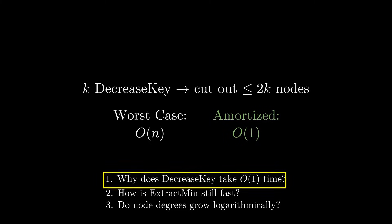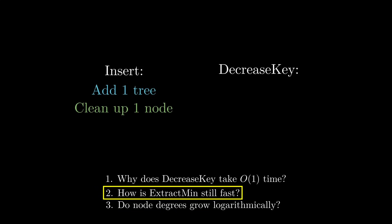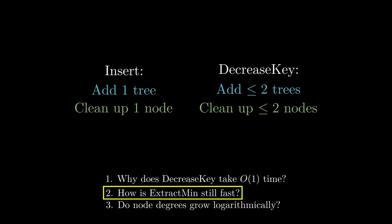This insight allows us to answer the second question as well. Every insert call added one tree to the root list, so we thought of every insert paying in advance for cleaning up that extra node during the next ExtractMin. We now know that every DecreaseKey call on average cuts out at most 2 nodes and therefore adds 2 trees to the root list. So every DecreaseKey needs to pay for cleaning up 2 nodes — some extra work per DecreaseKey, but only a constant amount. So DecreaseKey's running time stays constant. Accounting for amortization, the running time of ExtractMin only depends on the maximum node degree.